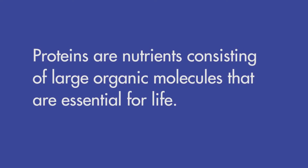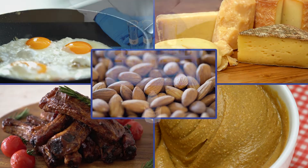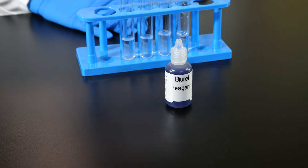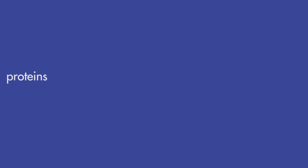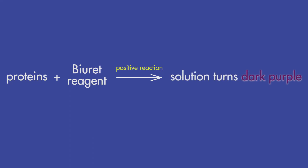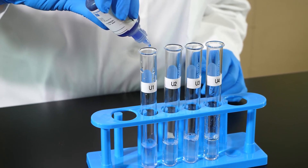Our third nutrient test will be for proteins. Proteins are nutrients consisting of large organic molecules that are essential for life. Proteins provide structural support for cells, regulate metabolic processes, and transport nutrients and other substances throughout the body. Proteins are found in eggs, cheese, meat, peanut butter, and almonds. To detect proteins in a solution, we use a chemical indicator called Biuret reagent. If proteins are present in a solution, a positive reaction between Biuret reagent and protein will occur, and the solution we are testing will turn dark purple.